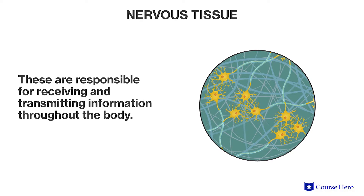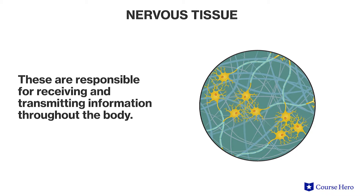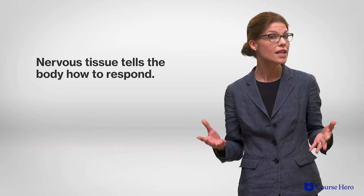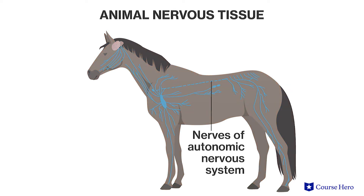Nervous tissue is responsible for receiving and transmitting information throughout the body. Nervous tissue is made of neurons, which are cells that receive and transmit impulses. Collectively, these cells form the nervous system. Nervous tissue forms the structure of the brain and network of nerves throughout the body, and it tells the body how to respond to various external or internal stimuli. For example, when an animal hears a noise, this information is transmitted to its brain as a type of signal, and the brain tells the body how to respond.